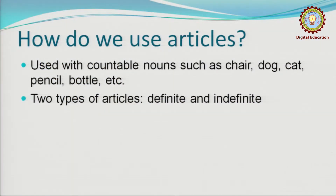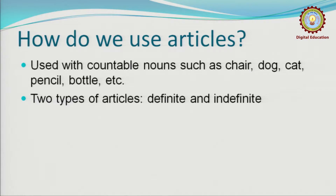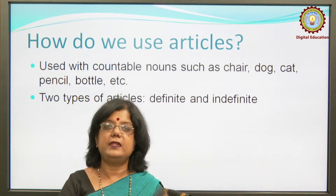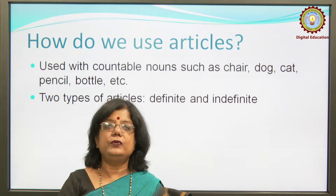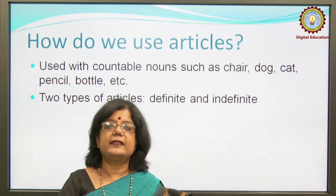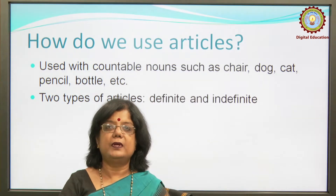How do we use articles? We use articles in certain ways. Articles are used with countable nouns such as chair, dog, cat, pencil, bottle, etcetera — all of them are countable; we can count them. Articles are also used with various other factors which we will be scrutinizing very soon.